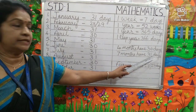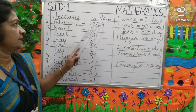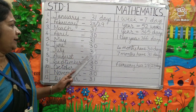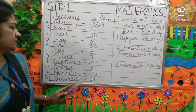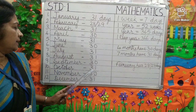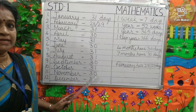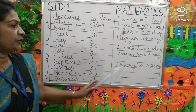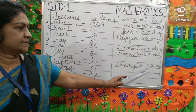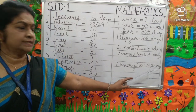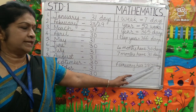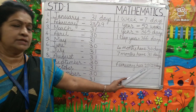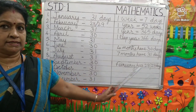Seven months have 31 days — January, March, May, July, August, October and December. February has 28 or 29 days. If it is a leap year it will have 29 days, otherwise it will have only 28 days.